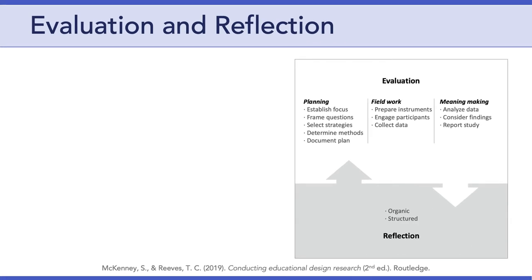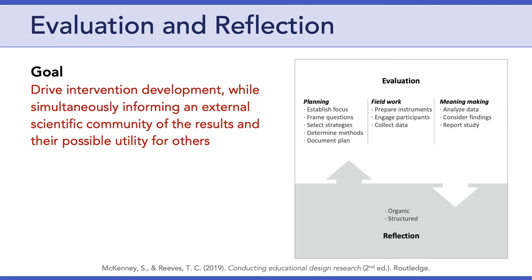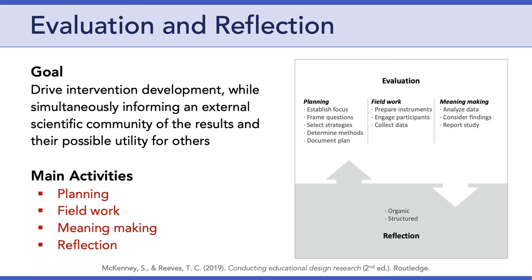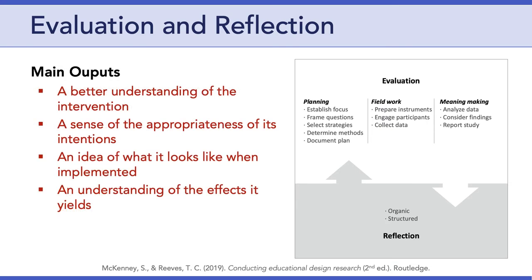Let's move on to the third phase of DBR, which is Evaluation and Reflection. McKinney and Reeves argue that the goal of this phase is to drive intervention development while simultaneously informing an external scientific community of the results and their possible utility for others. This is where we get that dual focus on practical and theoretical insight. As shown in the picture, the main activities of this phase include planning, fieldwork, meaning-making, and reflection. The main outputs of Evaluation and Reflection include a better understanding of the intervention itself, a sense of the appropriateness of the intervention's intentions, an idea of what the intervention looks like when implemented, and an understanding of the effects the intervention yields.